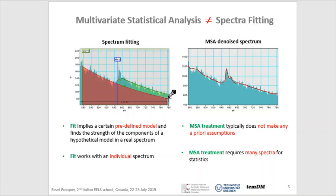MSA is not spectra fitting. Spectra fitting implies a model with certain parameters and it tries to find parameters fitting best your experimental data. In contrast, MSA doesn't assume any model — it's mostly an unsupervised approach. Second, spectra fitting always works with an individual spectrum; if there are many spectra, the same procedure is repeated several times. MSA is completely different: it ultimately requires a lot of spectra as input because MSA is a statistical method, so it requires a lot of statistics.